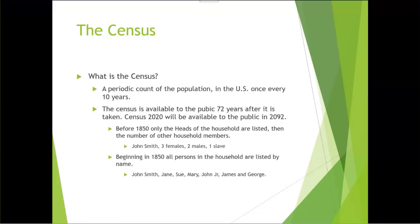Before 1850, only the heads of the household are listed, and then the number of other people in the household by sex — so John Smith, three males, two males, one slave. Beginning in 1850, all persons in the household are listed by name: John Smith, Jane, Sue, Mary, John Junior, James, George.